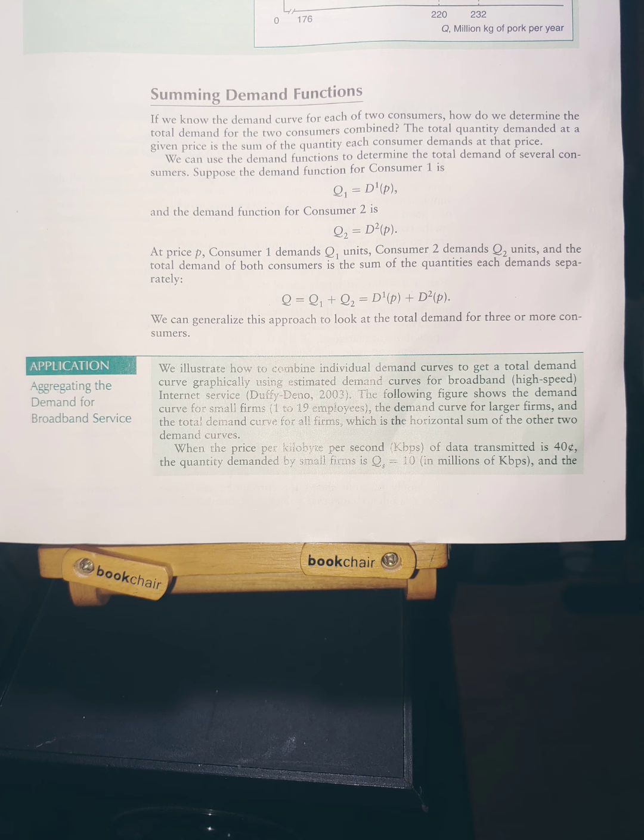At price P, Consumer 1 demands Q₁ units, Consumer 2 demands Q₂ units, and the total demand of both consumers is the sum of the quantities each demands separately. Q = Q₁ + Q₂ = D¹(P) + D²(P).